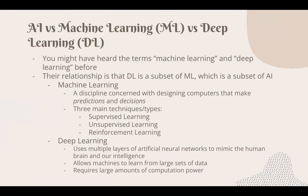These three words — artificial intelligence, machine learning, and deep learning — are used interchangeably, but they are not the same thing. Deep learning is a subset of machine learning, which is a subset of artificial intelligence. Machine learning is concerned with designing computers that make predictions and decisions. There are three main types: supervised learning, which uses labeled data sets to train algorithms to classify or predict; unsupervised learning, which analyzes and clusters unlabeled data sets; and reinforcement learning, which is based on rewarding desired behaviors and punishing undesired ones. A reinforcement learning agent perceives its environment, takes actions, and learns through trial and error.